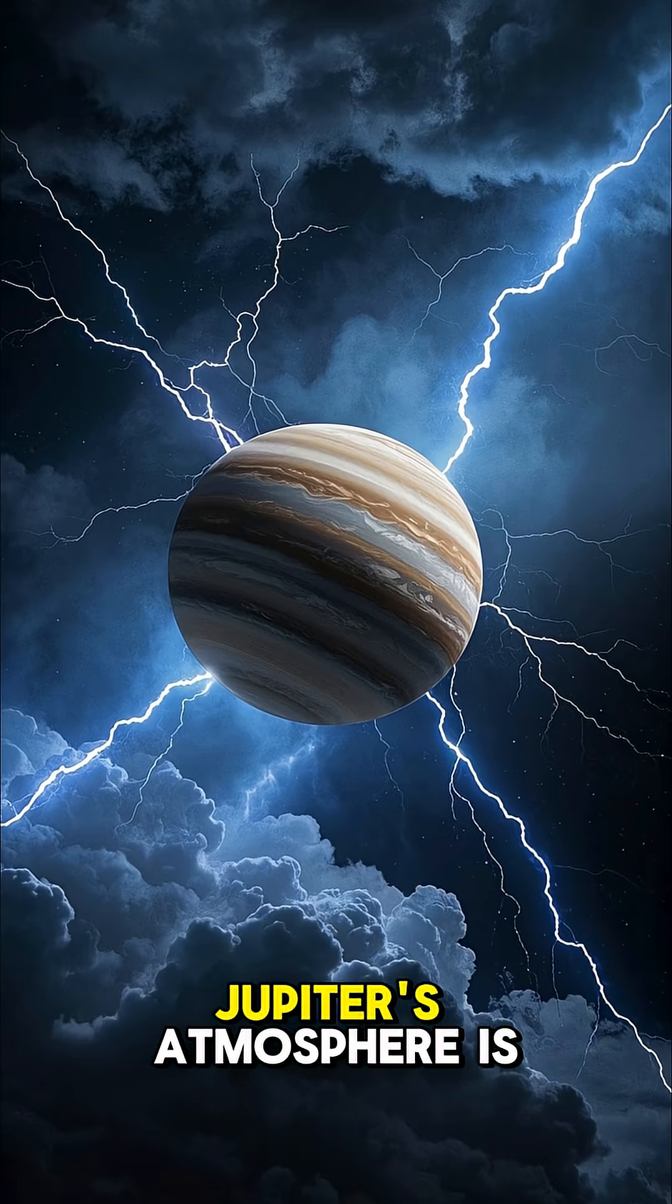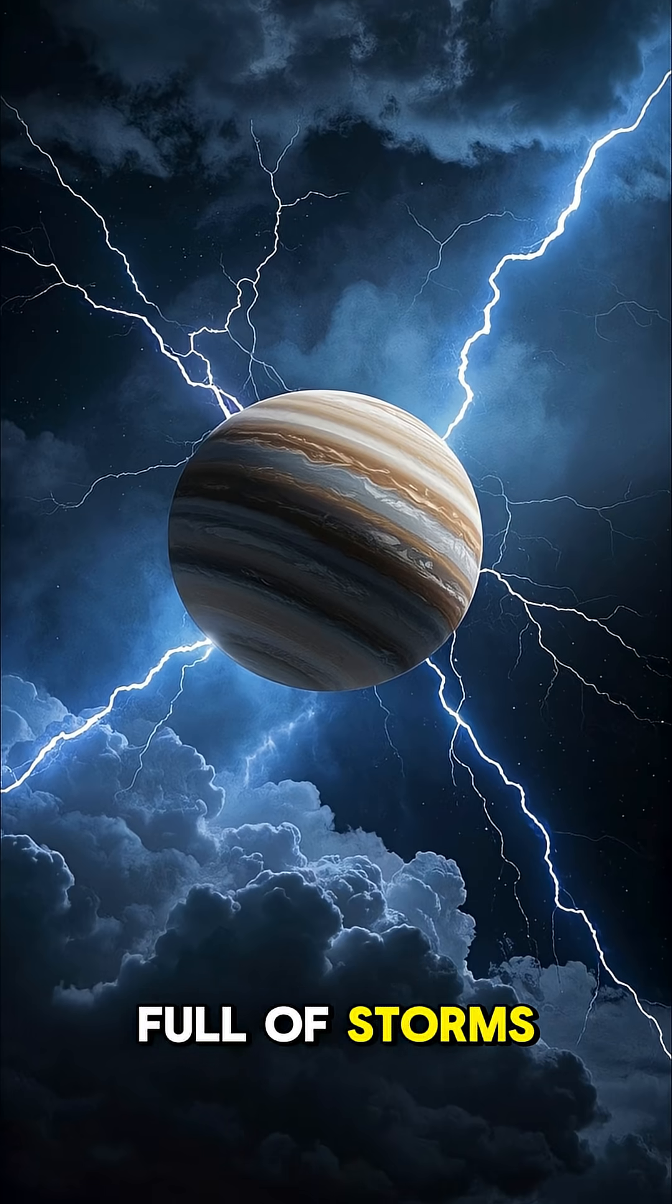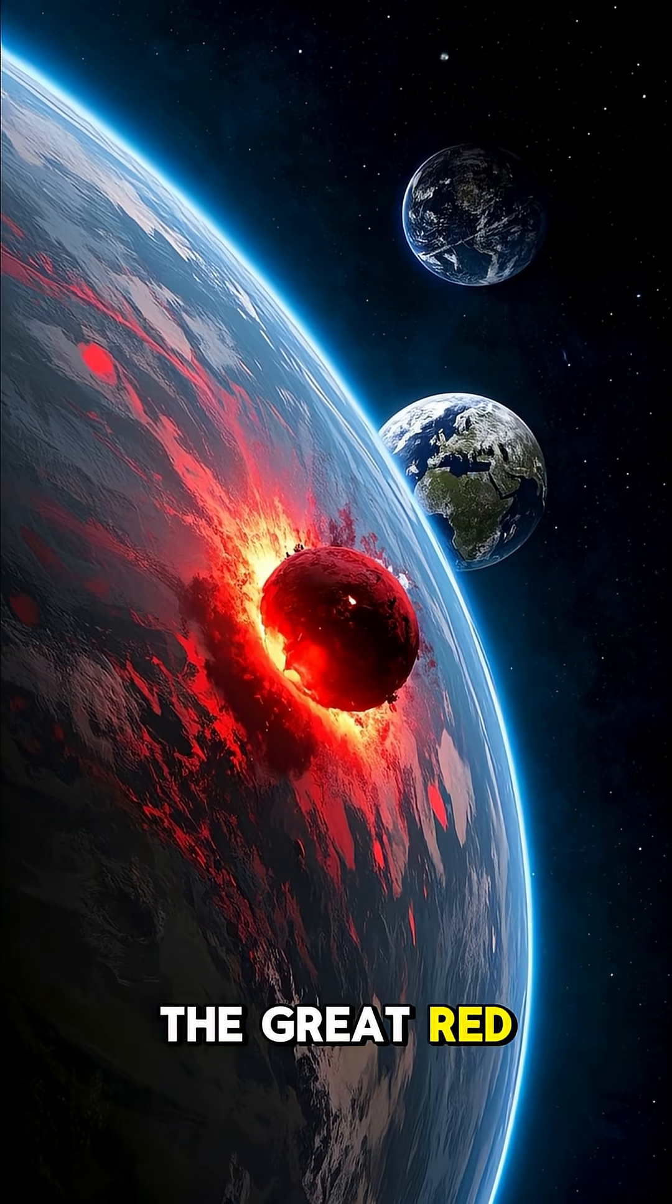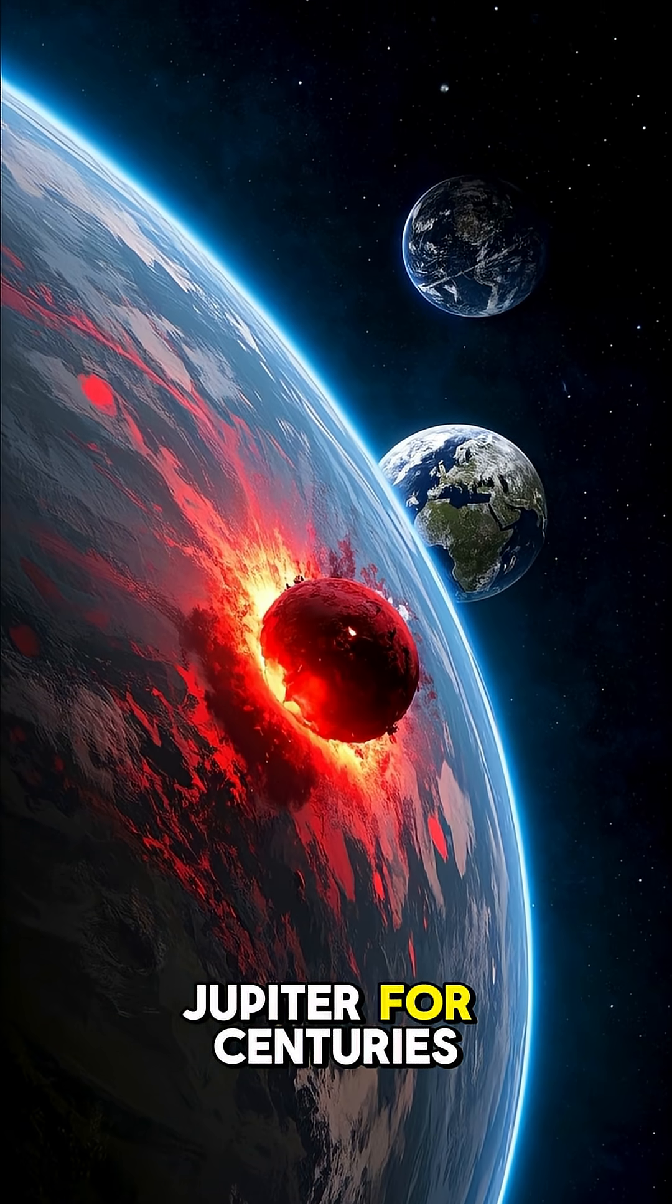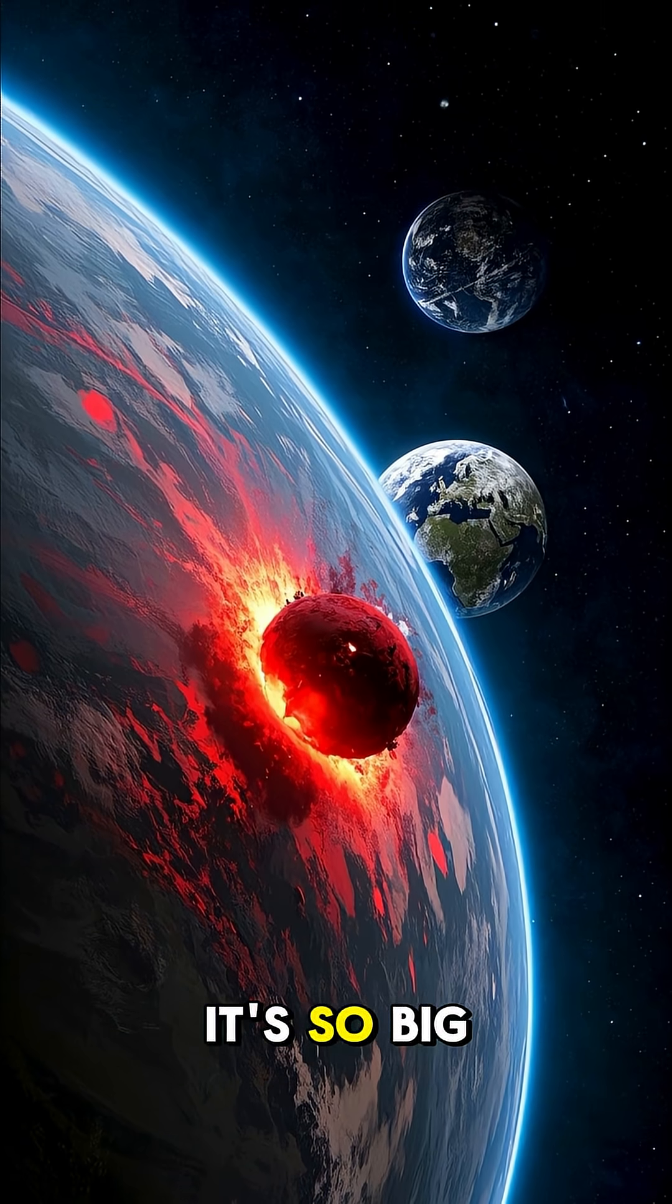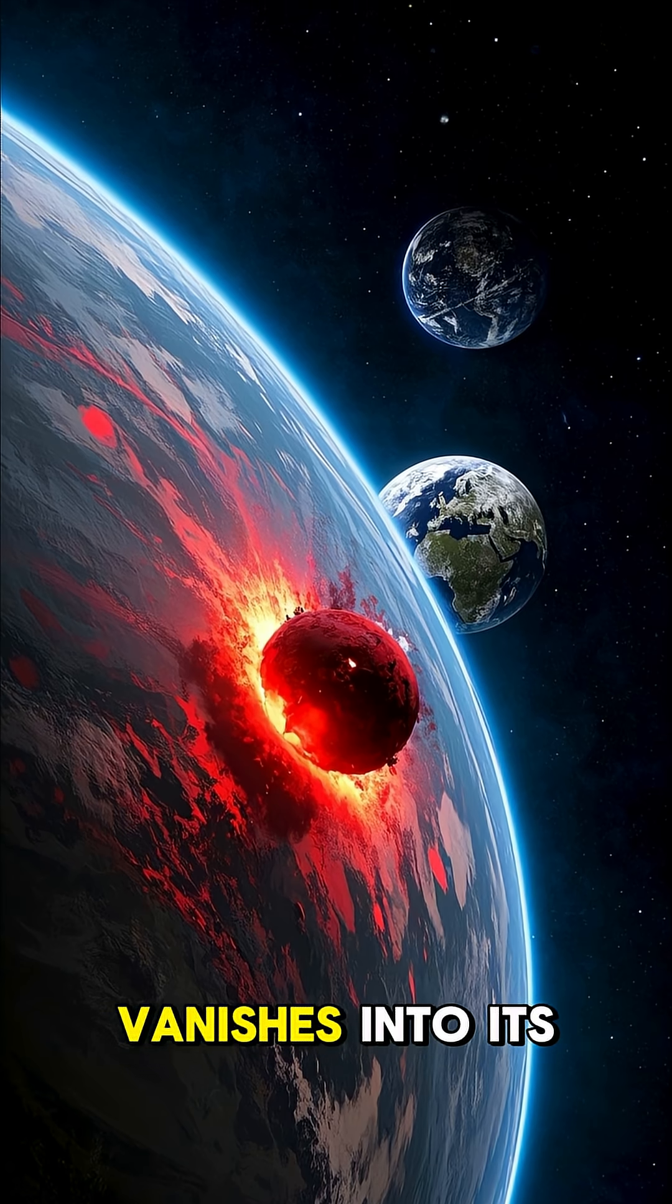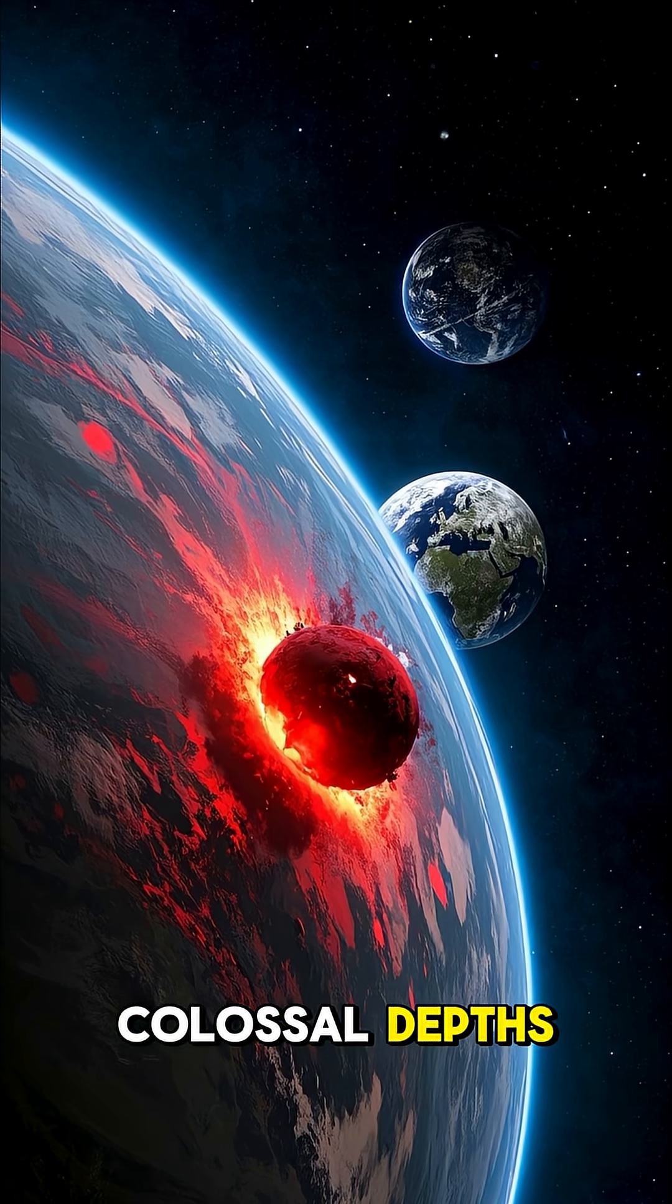Number five, Jupiter's atmosphere is full of storms that can last for years. The Great Red Spot is a giant storm that's been raging on Jupiter for centuries. It's so big that Earth simply vanishes into its colossal depths.